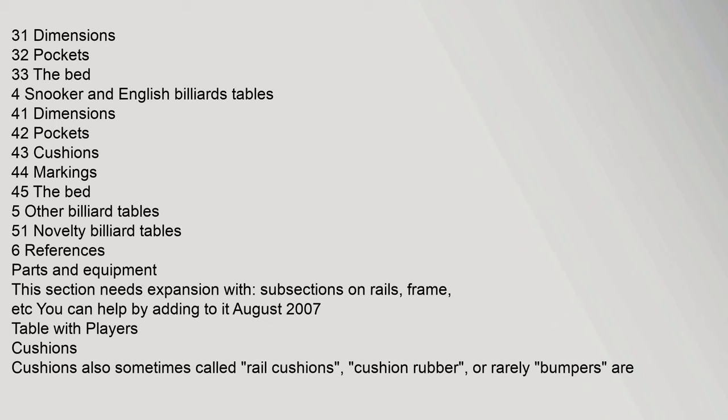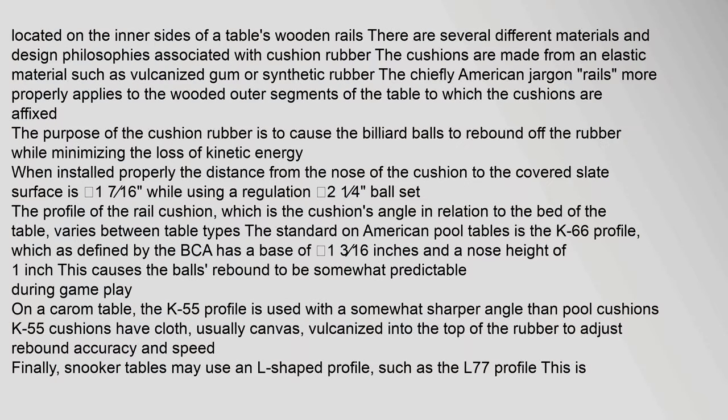Cushions, also sometimes called rail cushions, cushion rubber, or rarely bumpers, are located on the inner sides of a table's wooden rails. There are several different materials and design philosophies associated with cushion rubber. The cushions are made from an elastic material such as vulcanized gum or synthetic rubber. The term 'rails' more properly applies to the wooden outer segments of the table to which the cushions are affixed. The purpose of the cushion rubber is to cause the billiard balls to rebound off the rubber while minimizing the loss of kinetic energy.